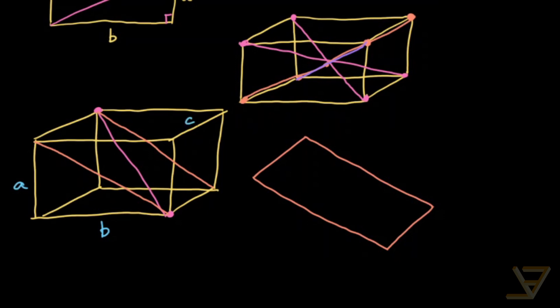So what we get is that this length over here, by the Pythagorean theorem on this triangle here, the length is equal to the square root of A squared plus B squared. And this length is C.